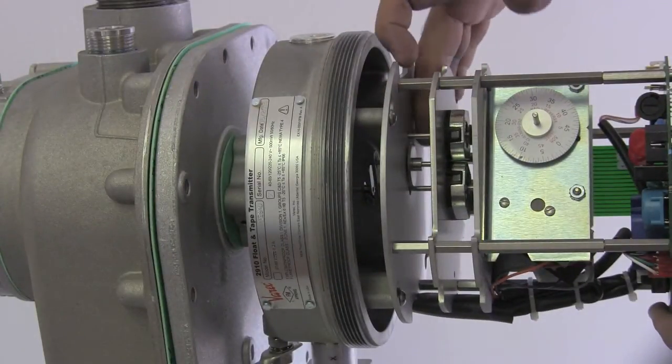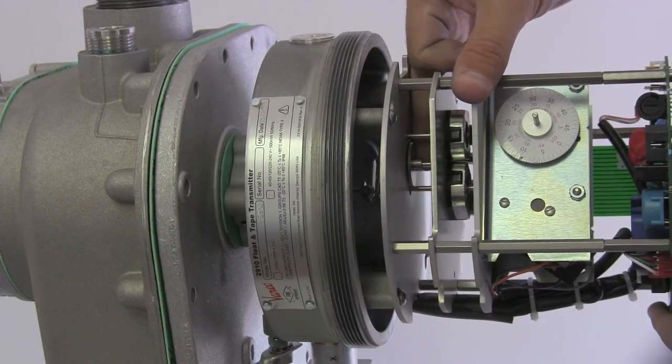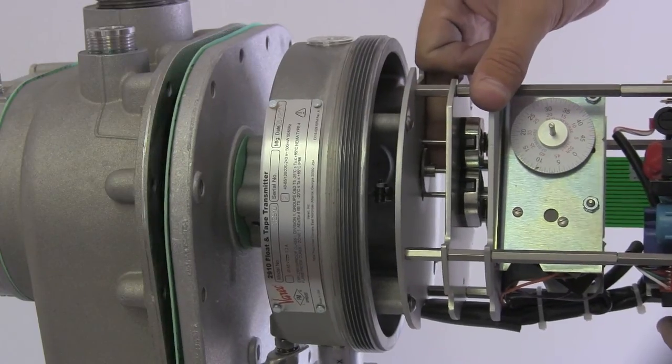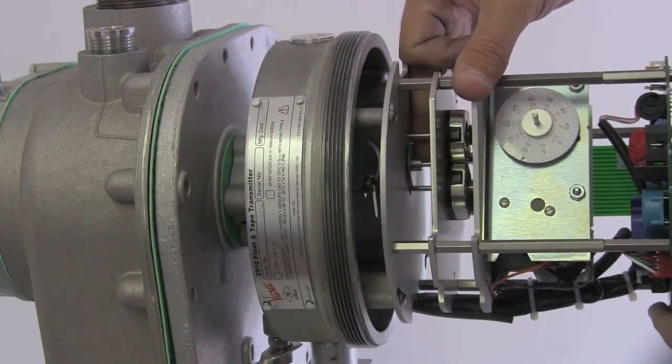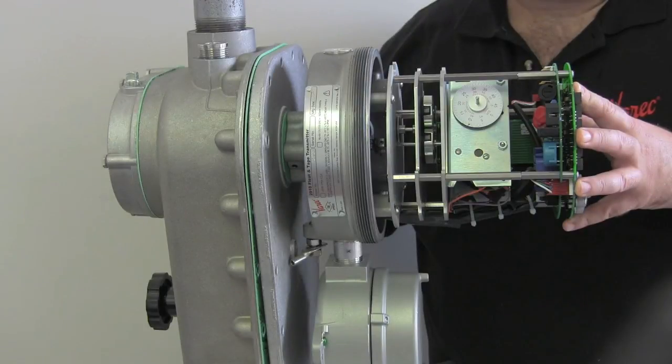Now turn the transmitter shaft so that the coupling bumps against the sprocket pin. Pull the gauge cover back slightly, enough so that you can turn the coupling just enough to engage onto the pin. And check to see if the pin and coupling are engaged.